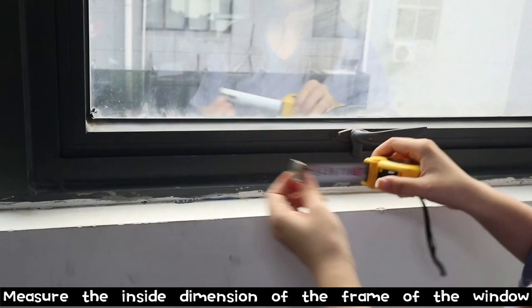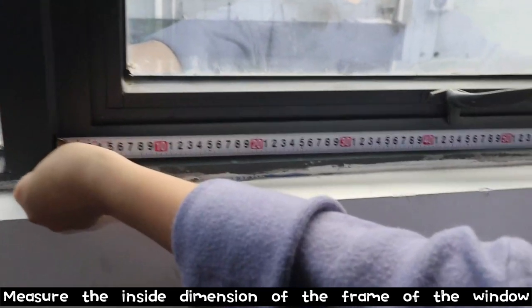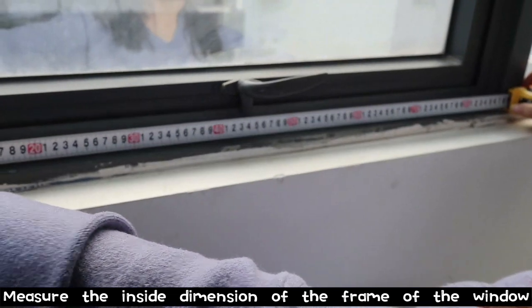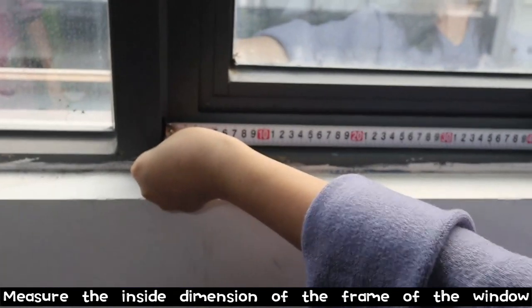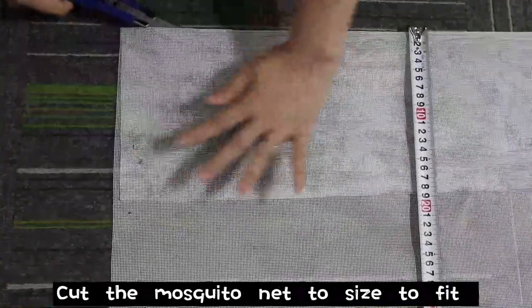Measure the inside dimension of the frame of the window. Cut the mosquito net to size 2 feet.